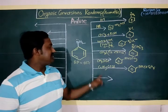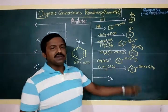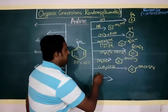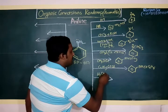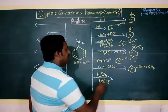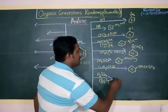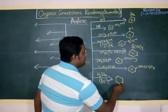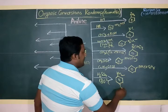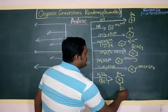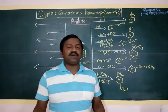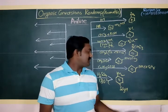Aniline reacts with H2SO4 at about 180 degrees centigrade. The compound formed is NH2·SO3H, and it is called sulfanilic acid.